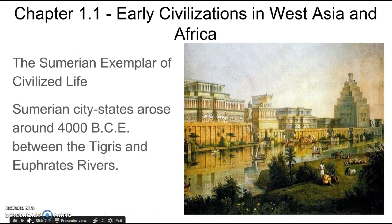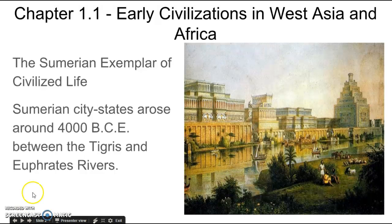The first part of this chapter is entitled 'The Sumerian Exemplar of Civilized Life.' Sumerian city-states arose around 4,000 BCE between the Tigris and Euphrates rivers. For centuries, this region was dominated by a collection of independent city-states, including the first known city in history, the city of Ur.